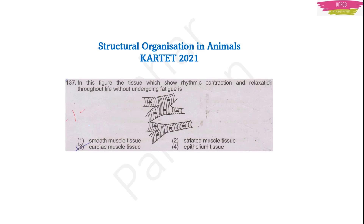We chose this topic Structural Organization in Animals because in the Karnataka TET paper, one question was asked from this chapter. Let's look into this question — it asks: in this figure, which tissue shows rhythmic contraction and relaxation throughout life without undergoing fatigue?